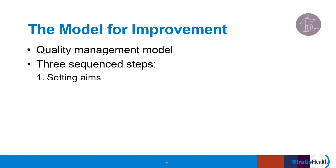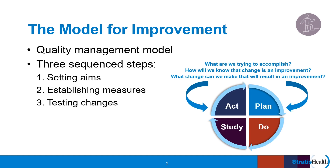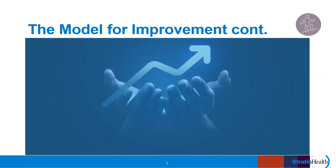The model for improvement is a quality management model that involves three sequence steps: setting aims, establishing measures, and identifying changes to make and testing changes. The model for improvement has roots in the plan do study act cycle, originally conceived of by Walter Shewhart and later advanced by W. Edwards Deming.